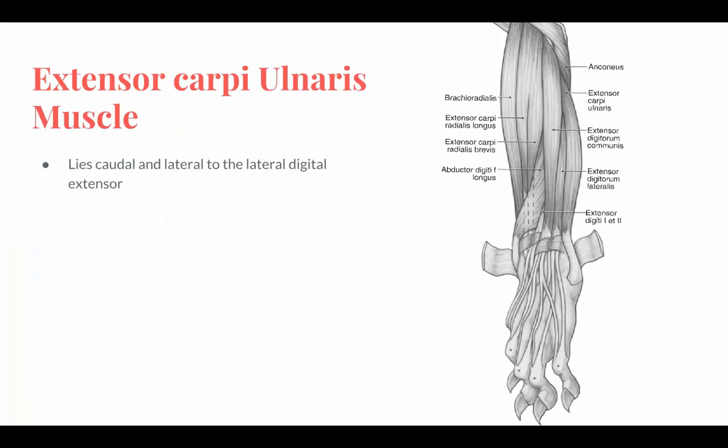Extensor carpi ulnaris muscle. It lies caudal and lateral to the lateral digital extensor. It is the only flexor that arises on the lateral epicondyle. It extends from the lateral epicondyle towards the lateral aspect of metacarpal 5 and the accessory carpal bone. Its function is to flex the carpal joint.